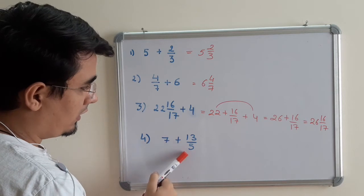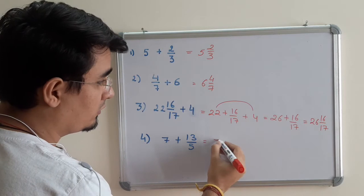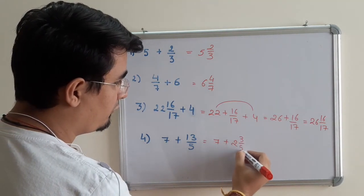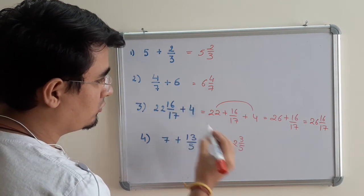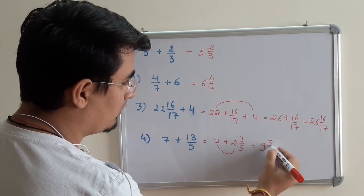This is a whole and this is an improper fraction, so I have to first convert into a mixed fraction: 7 + 2 3/5. We have done this already—we are adding these two numbers. I will be getting 9 3/5.